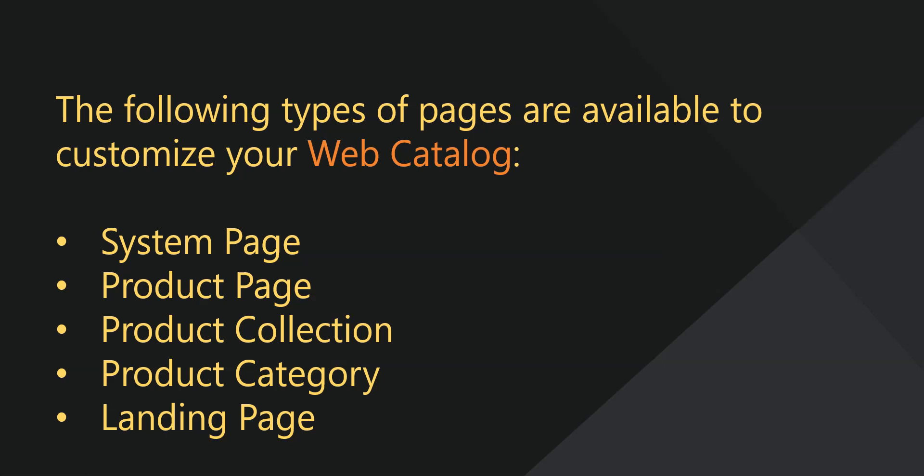The following types of pages are available to customize your web catalog: system pages, product pages, product collection, product category, and landing pages.